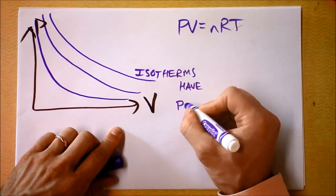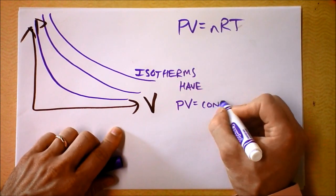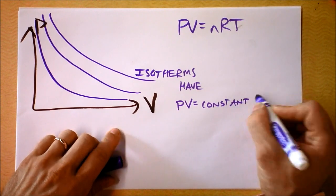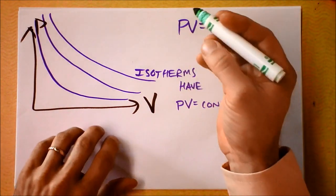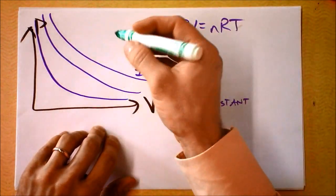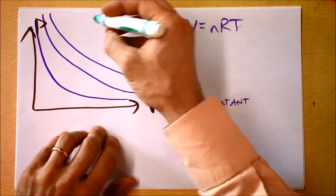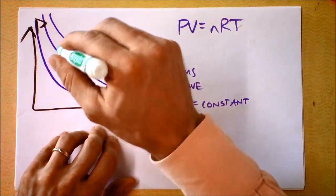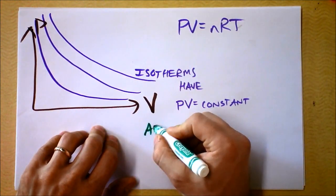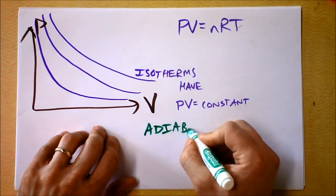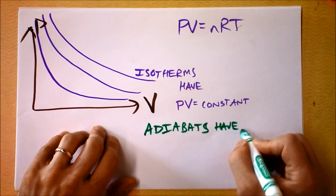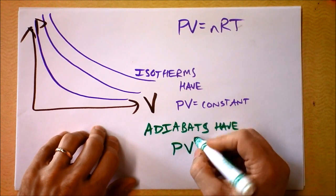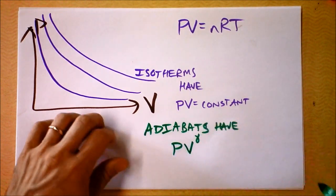Isotherms have PV equals a constant, but adiabats are a little bit different. This is the answer to the question that we posed in a previous video. Adiabats are always steeper. Adiabats have pressure times volume to the gamma power.